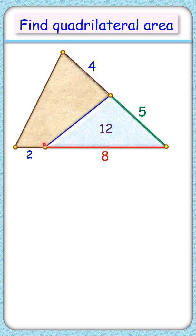Can you find the area of this brown quadrilateral where the given area of this blue triangle is 12 centimeters squared? Let's check the solution.